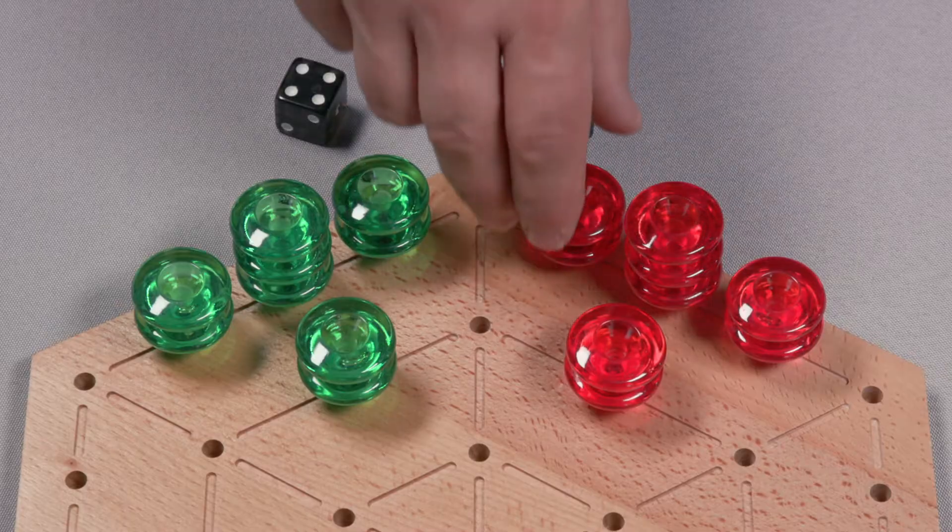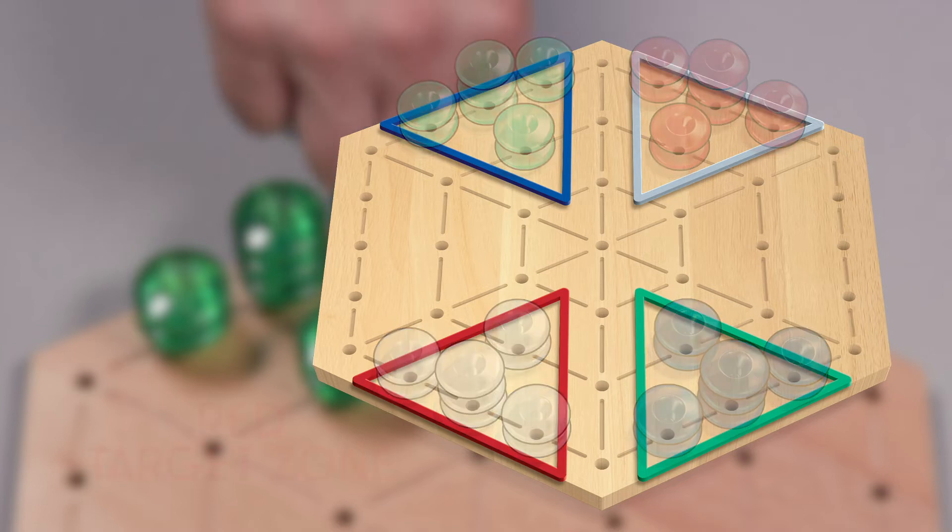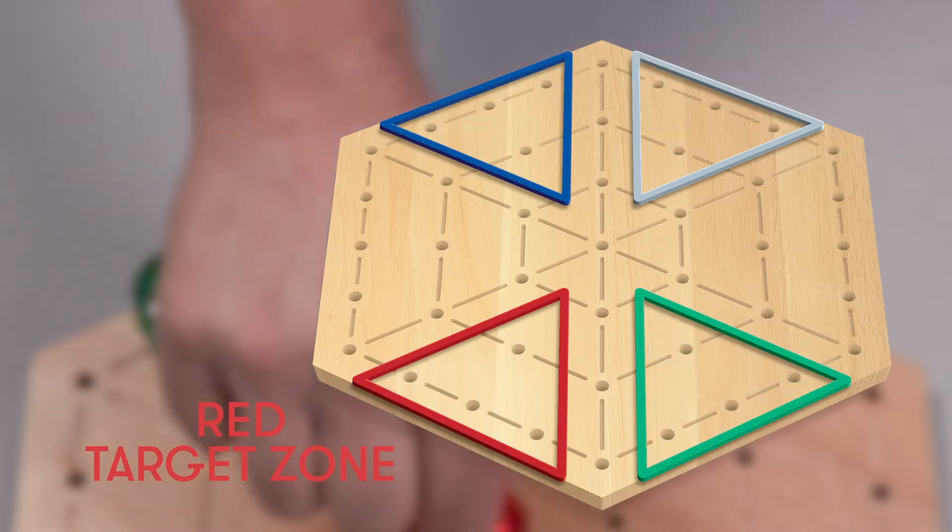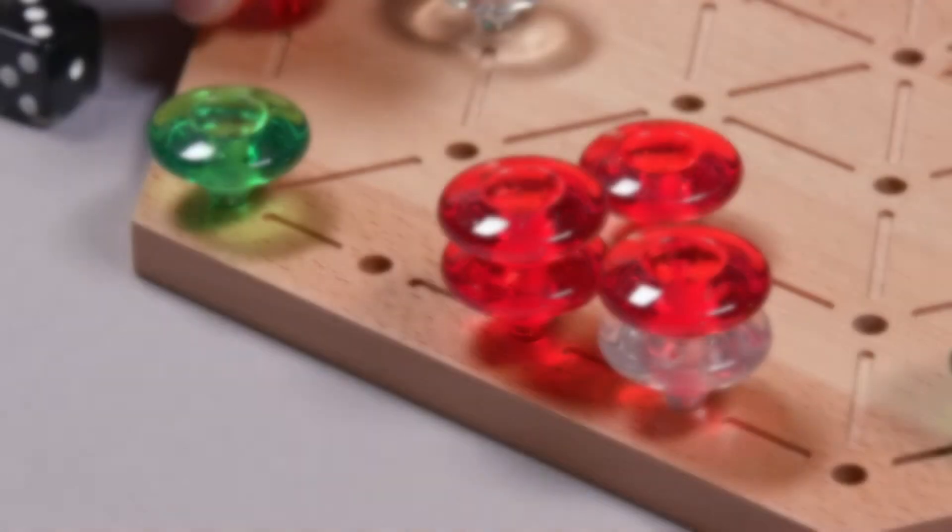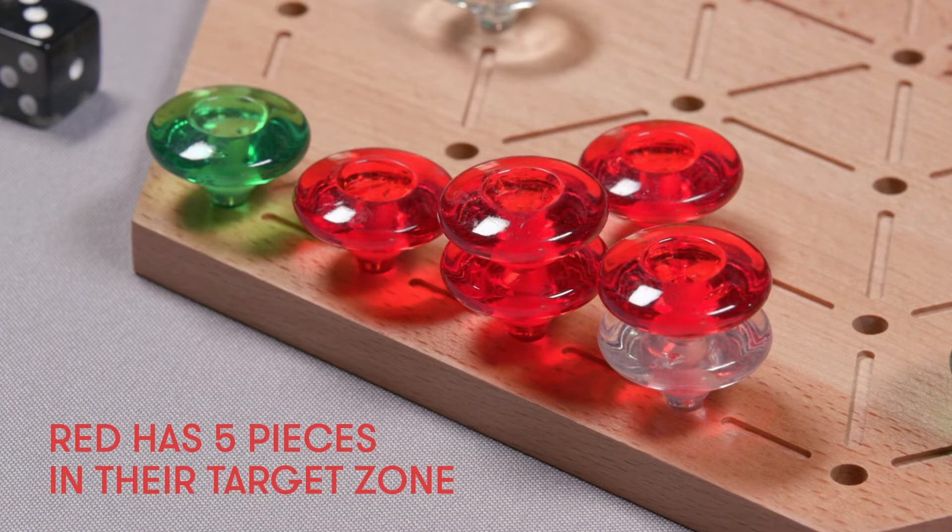Players take turns rolling the dice and moving their pieces into the target zone while also trying to block their opponents from doing the same. The first player to get more than half of their pieces to the opposite side of the board in any of the same positions as they started in wins the game.